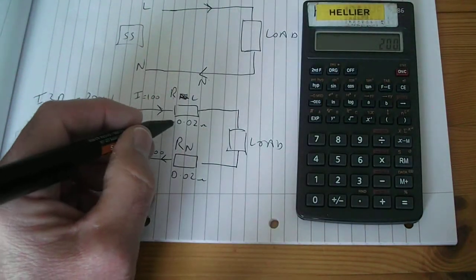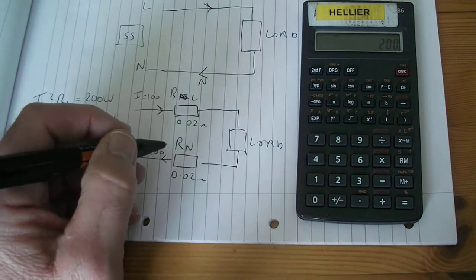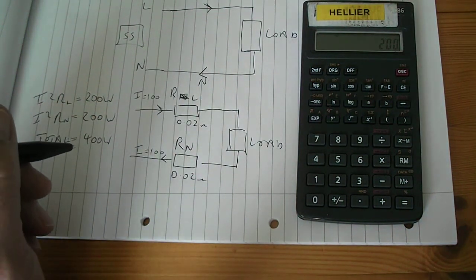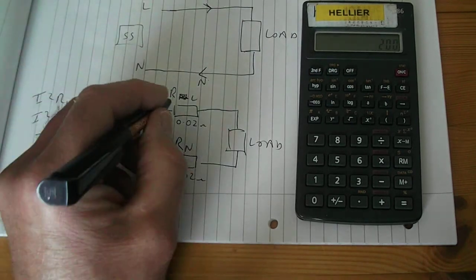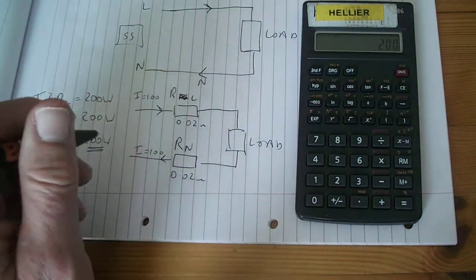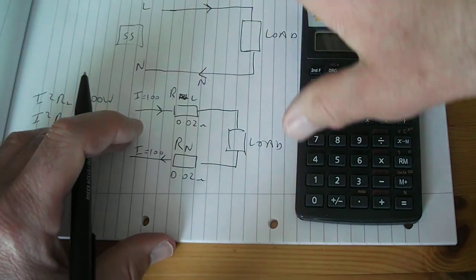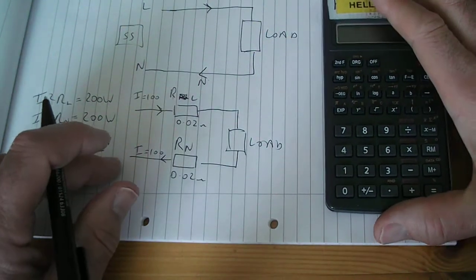So if I'm supplying a load of 100 amps with this cable, each of the conductors is 0.02 of an ohm, I will dissipate or give off 400 watts of heat in the cable.